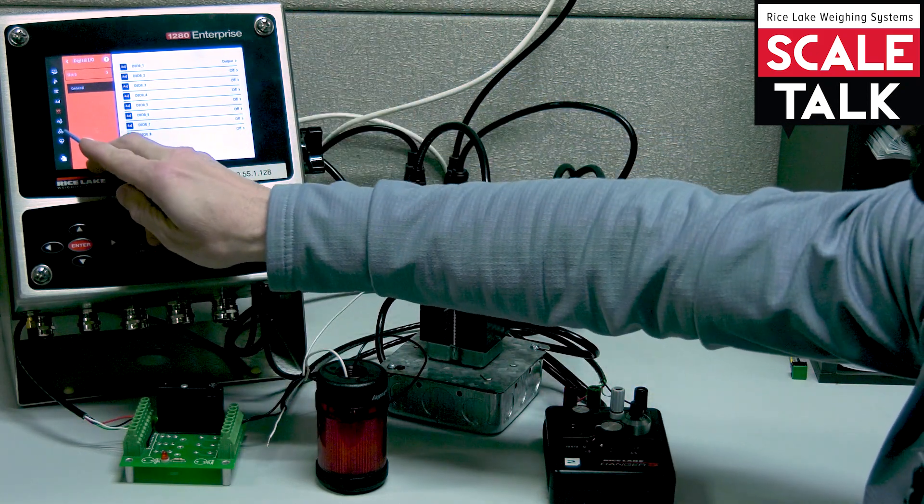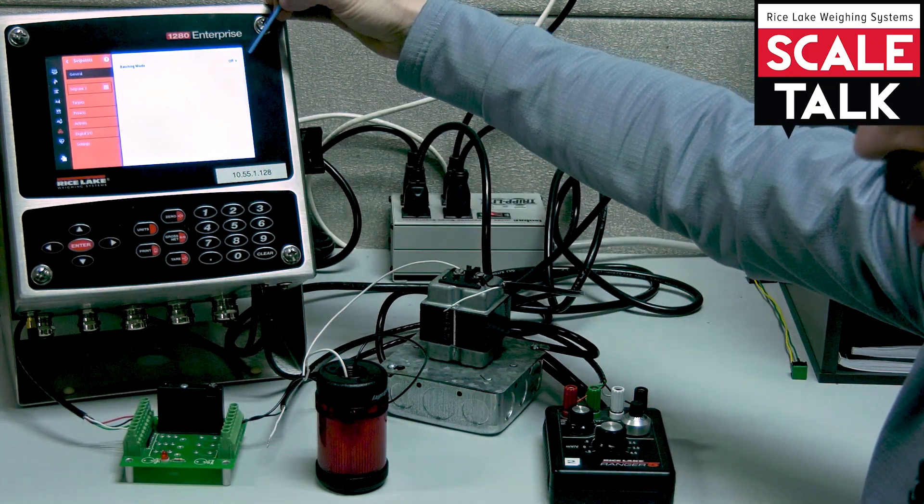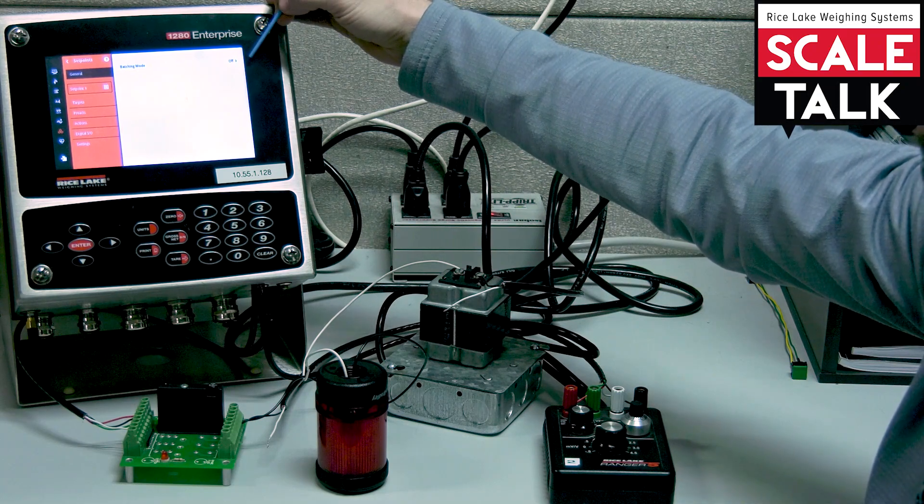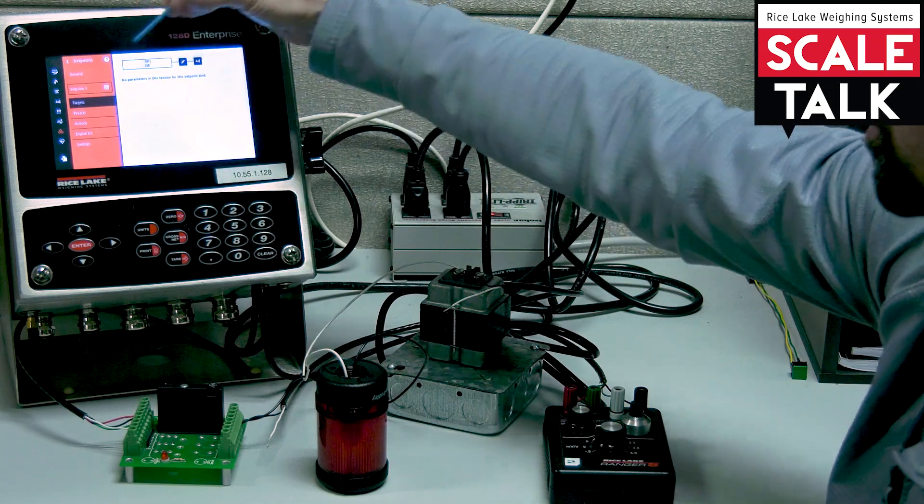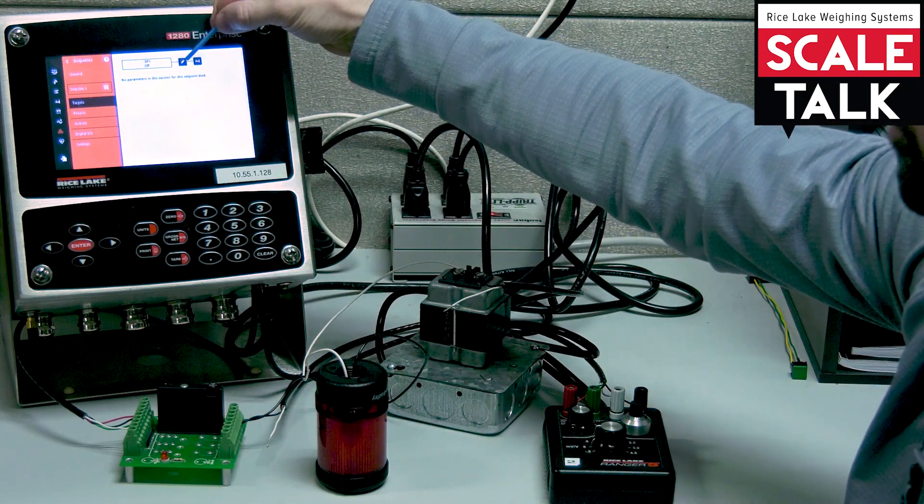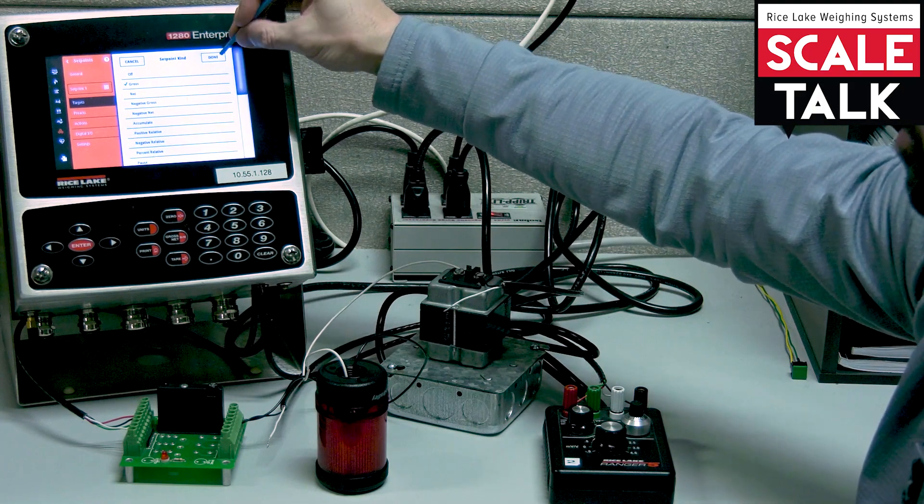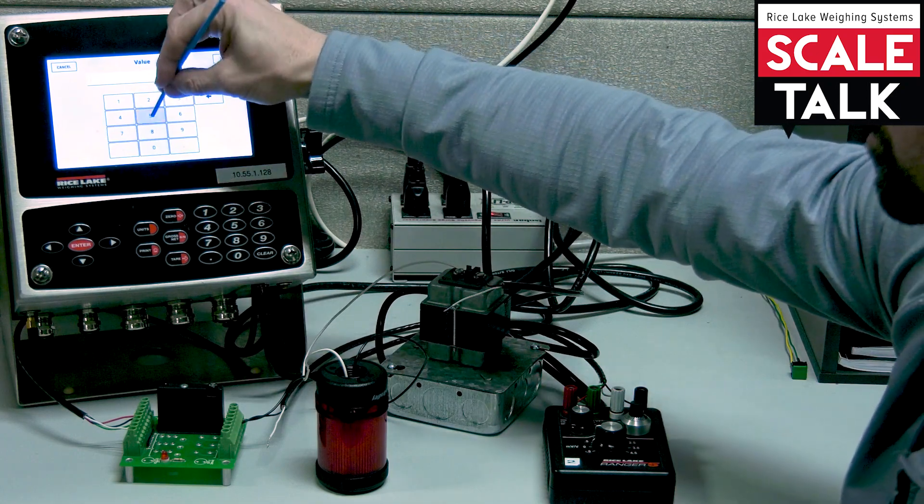I'm going to switch over to the set point menu now. Our batching mode is off because we're not going to use batching right now, just free running. Go into my set point one that's selected, go to the target. We see that's off. Hit the pencil. We'll select a simple gross set point. Hit done. I'm going to set the value for 500 pounds.